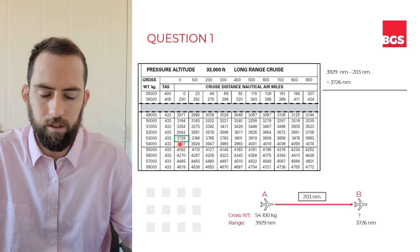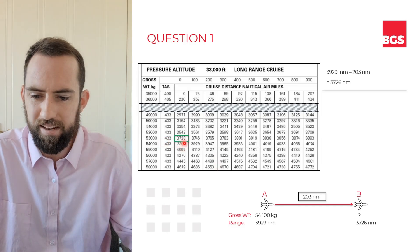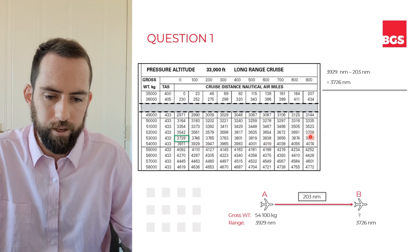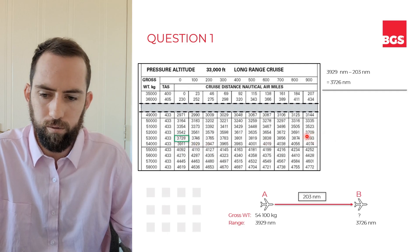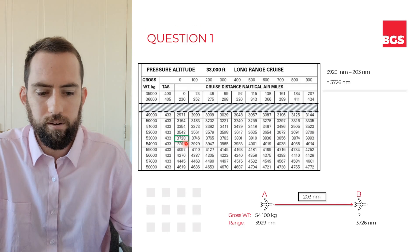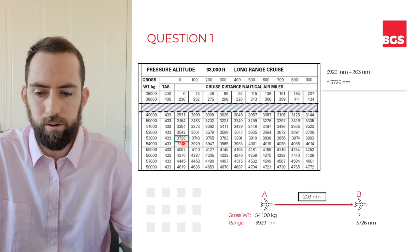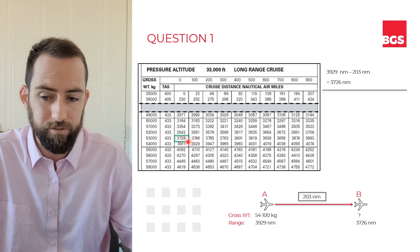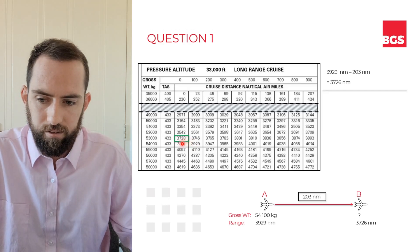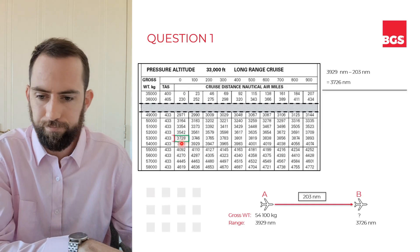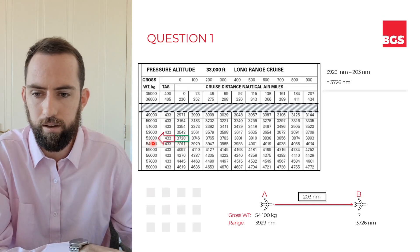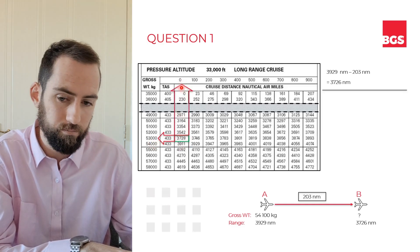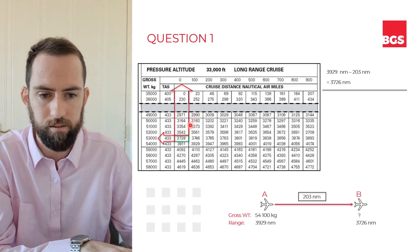Looking around the table, the closest figure is 3,728. The figure above it is quite a long way off, and the figure below it is also quite a long way off, so this looks like the right one. If our range were halfway between figures we'd need to interpolate to the nearest 50 kgs, but in this case taking it across to the left-hand column gives us 53,000 kgs, and the increment from the top row is zero — so the gross weight at B is exactly 53,000 kgs.